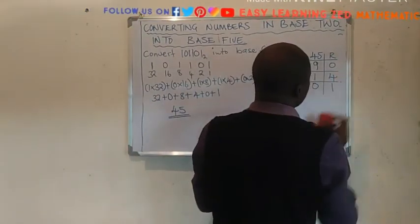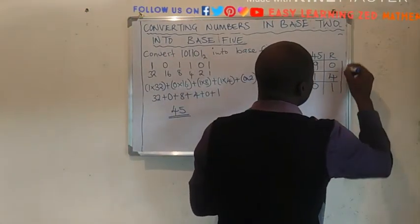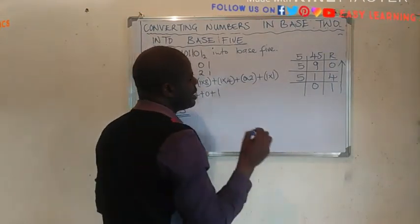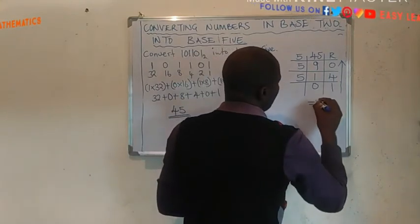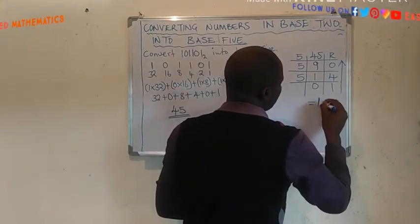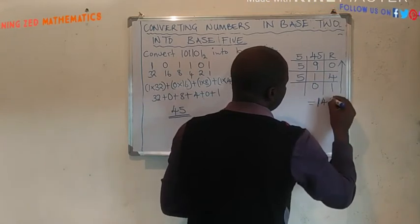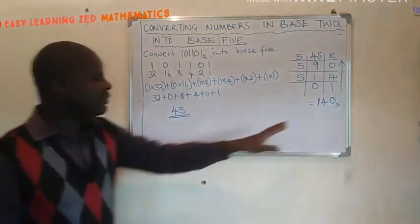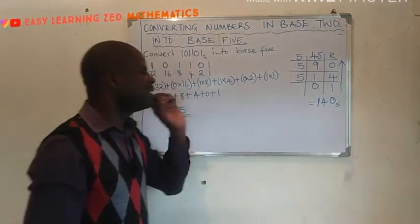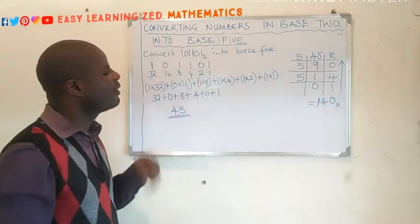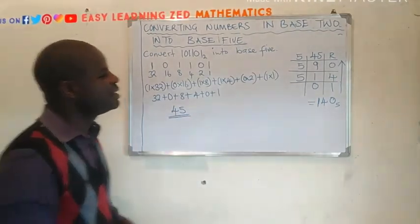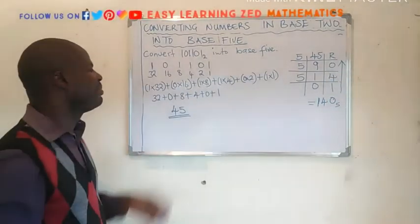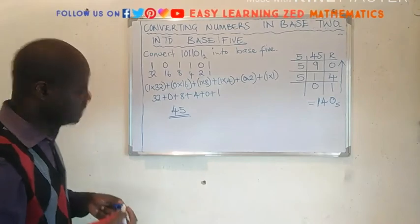Remember, when you're writing the answer, you start from down going upwards. What it means is the last remainder will be the first digit in the answer. So we are saying, we'll write 1 first, then 4, then 0, base 5. You always remember to write the base number. Because if you don't write the base number, that means that the answer I've given is in base 10. Only base 10, that's why we usually don't indicate the base number because it's taken that it's in base 10.